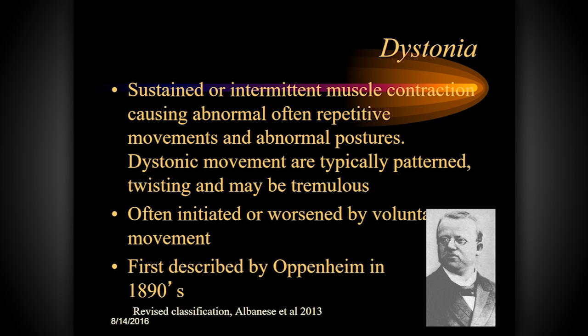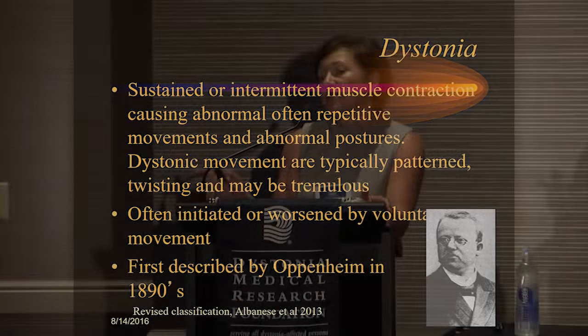What is the definition of dystonia? It is sustained or intermittent muscle contraction causing abnormal, often repetitive movements and abnormal postures. Dystonic movements are typically patterned, twisting, and may be tremulous, often initiated or worsened by voluntary movements. In the revised description, torsion dystonia was removed to recognize that it's not the only clinical phenomenology, and tremulous movement was added, recognizing that many dystonias can be associated with dystonic tremor as a clinical manifestation.